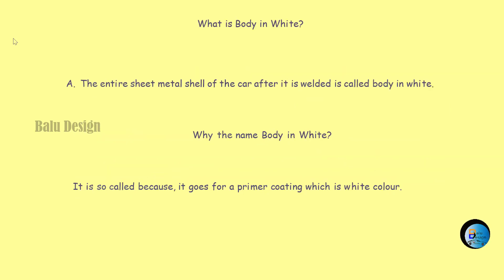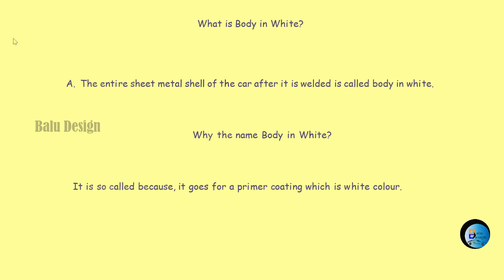What is body in white? The entire sheet metal shell of the car after it is welded is called body in white. Why the name body in white? It is so called because it goes for a primer coating which is white in color.